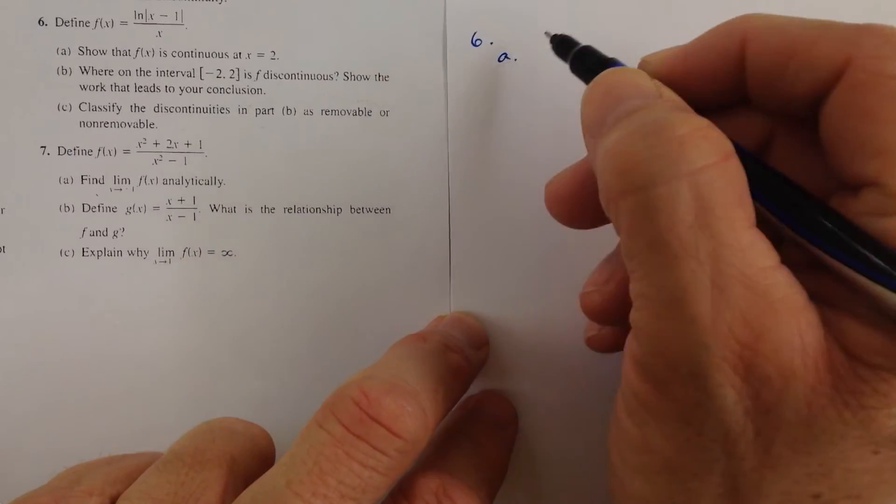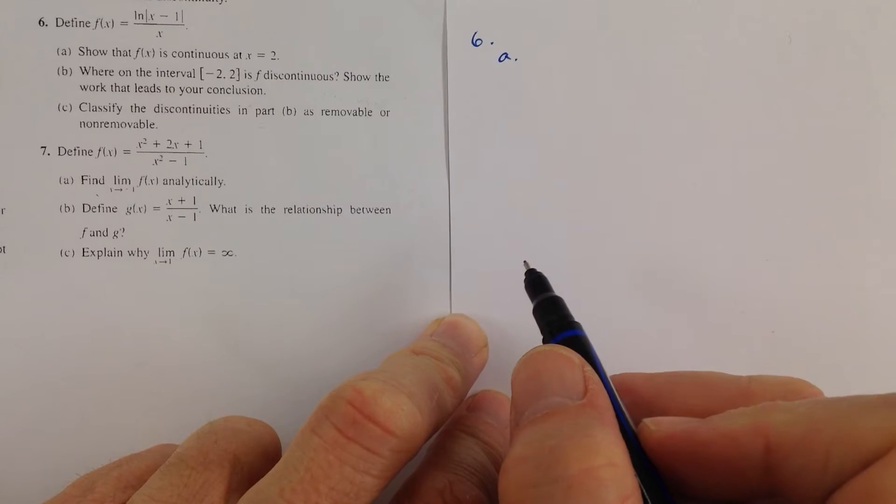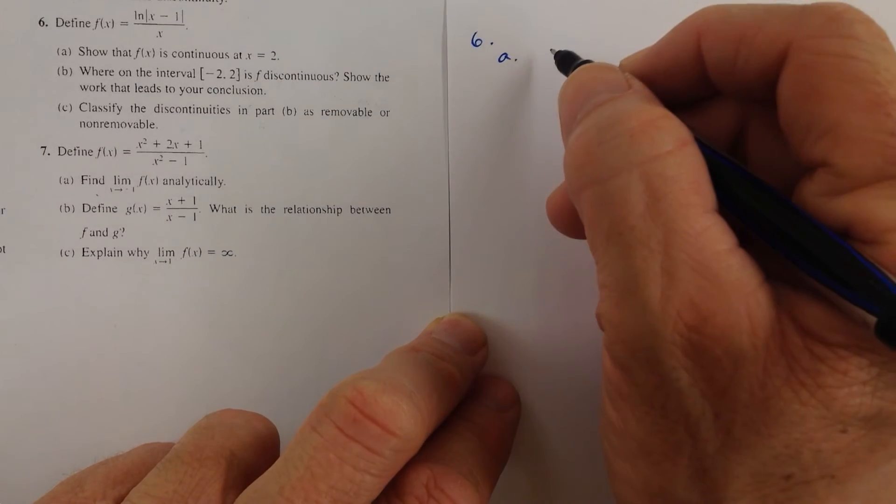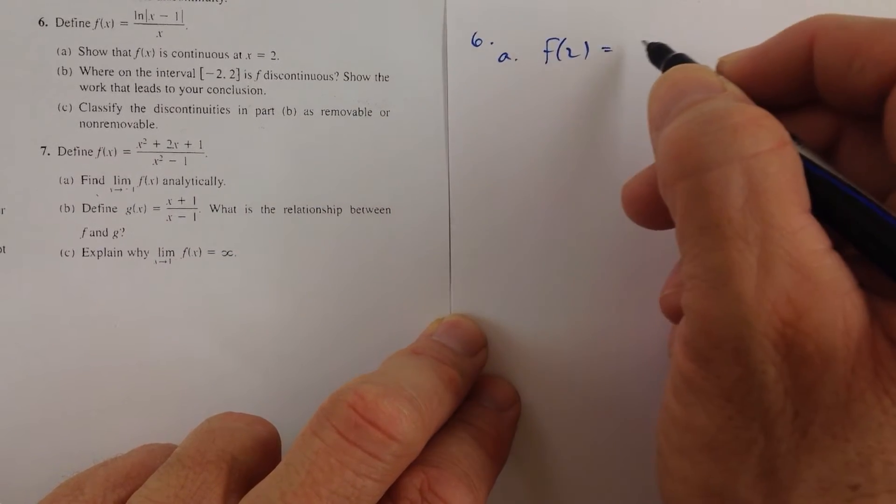Number 6. Part A is asking us to show that f of x is continuous at x equals 2, which means we have to show that f of 2 exists.